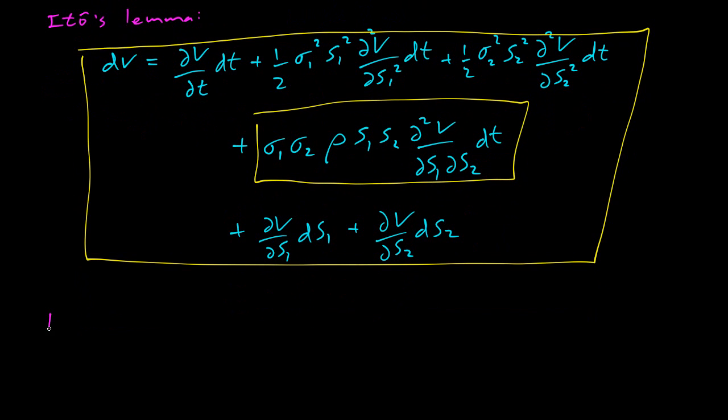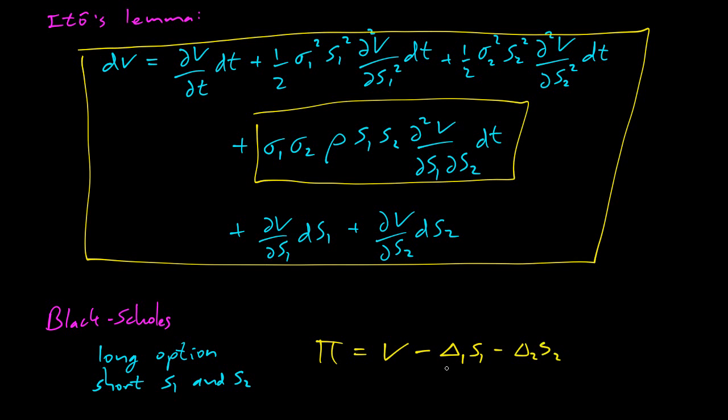That means we can go and do a Black-Scholes derivation. And so what do we want to do? We want to be long the option and short S1 and S2. So we have two underlyings, so we have to go two different short factors. So if we have some position pi, long the option, and then short S1, short S2. So we have two different factors, delta 1 and delta 2.